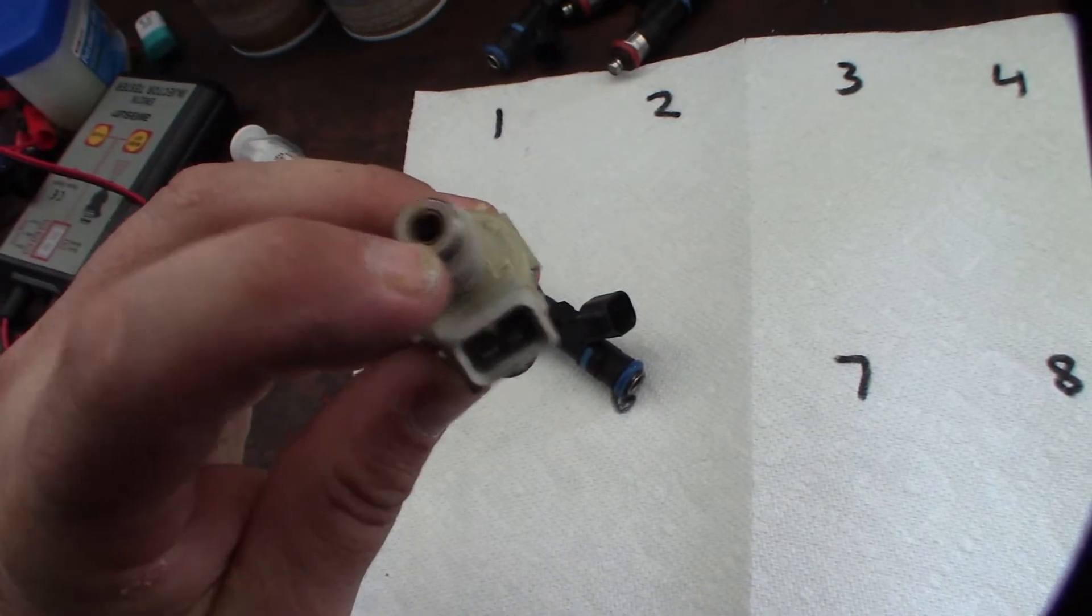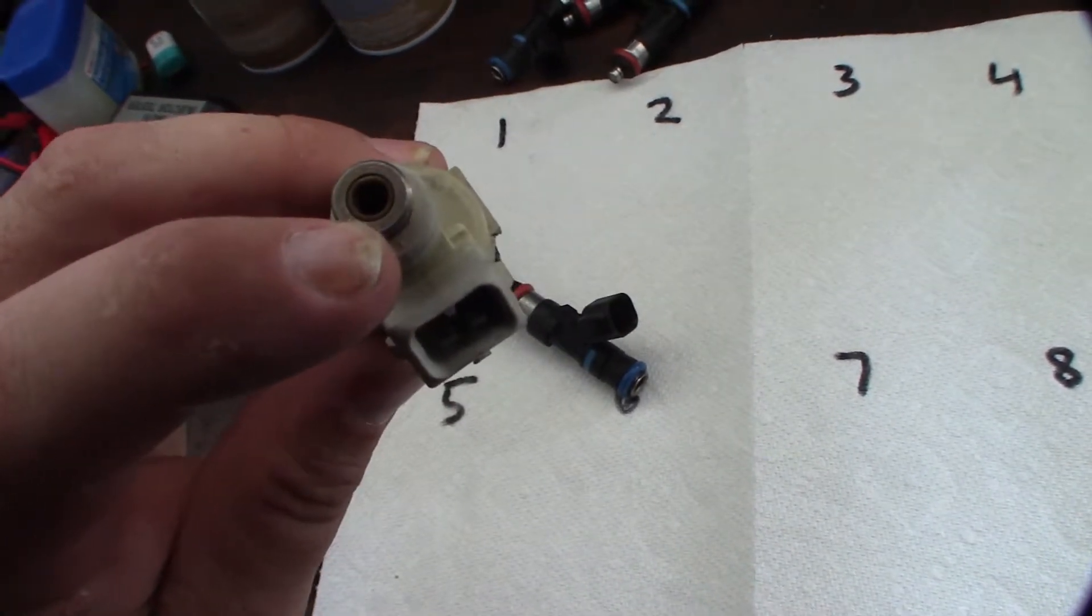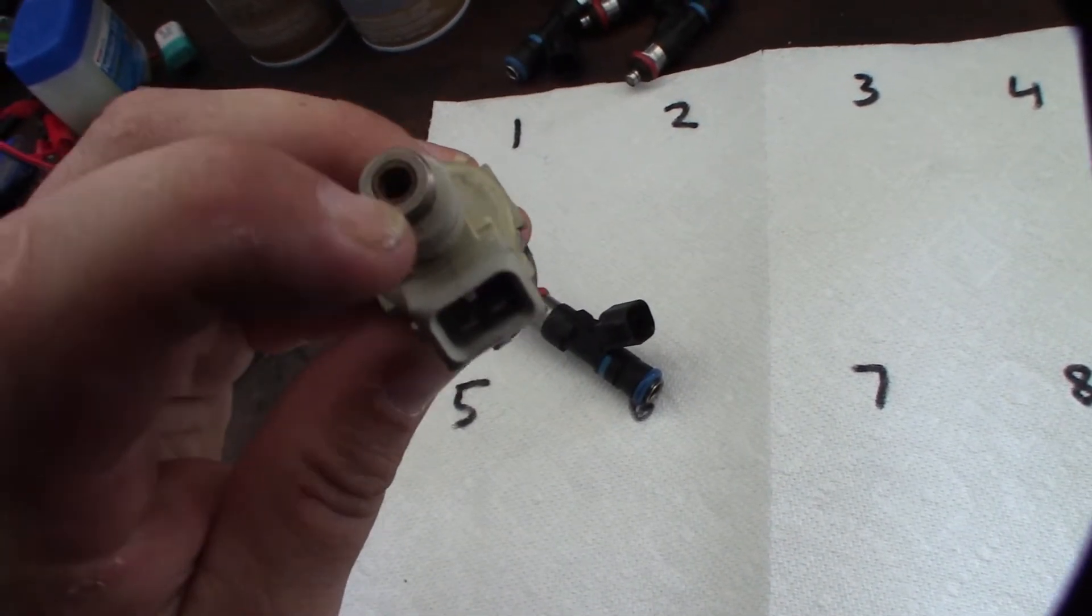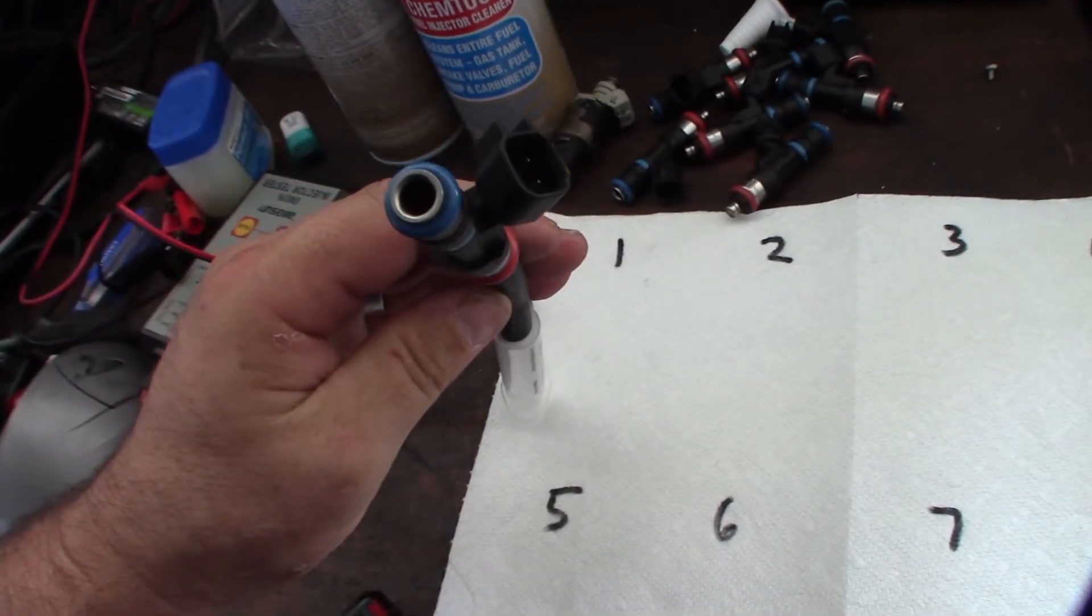There's a non-serviceable injector screen. Like, see that double layer right there? All the EV1 and EV6 injectors actually had a removable screen, whereas with the EV14 there's a screen in there you can't get to.